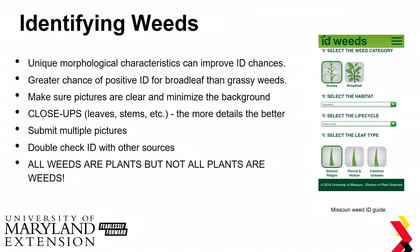When you use these weed ID apps, the more detail you know about your weed, the better. A lot of these ID apps have a key feature that allows you to enter in certain morphological features, like whether it has hairs on the stem or the shape of leaves. There's a greater chance of a positive ID with your broadleaf weeds more than your grassy weeds, because those grasses can be really small and hard to see all the distinguishing characteristics.